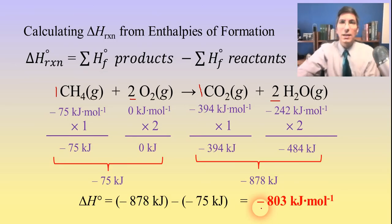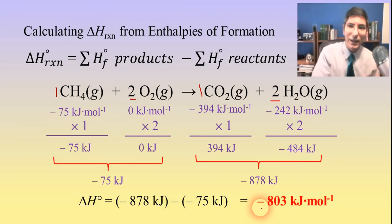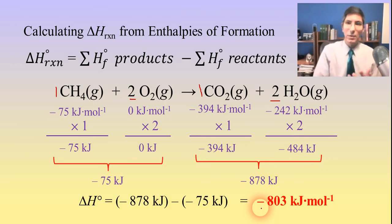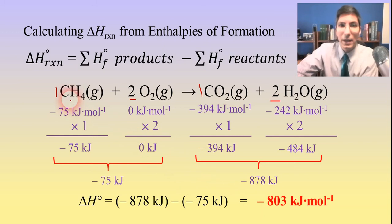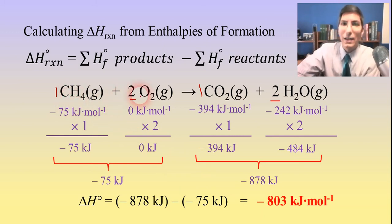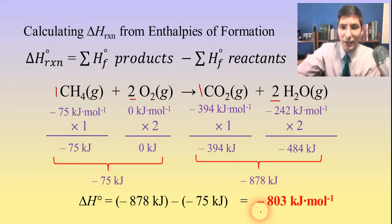Taking products minus reactants: negative 878 minus negative 75 — be careful with signs, two negatives make a positive — gives a total ΔH of negative 803 kilojoules per mole. That negative sign means the reaction is exothermic. Burning methane feels hot, so it makes sense that ΔH is negative.